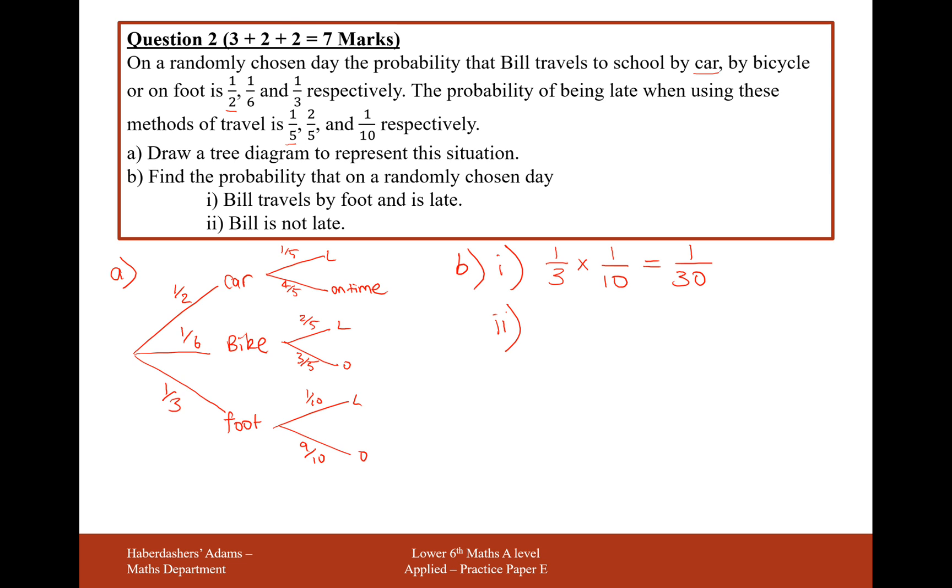Part B is find the probability that Bill is not late, so that's being on time. So we're going to have three different variations for Bill being on time. He can either travel by car and be on time, he can either travel by bike and be on time, or he can travel by foot and be on time. So to calculate this, we're going to need to go down all three of these branches and add the results together.